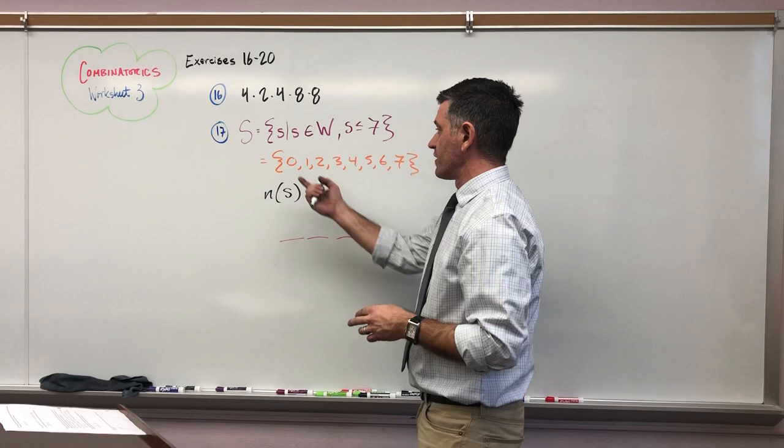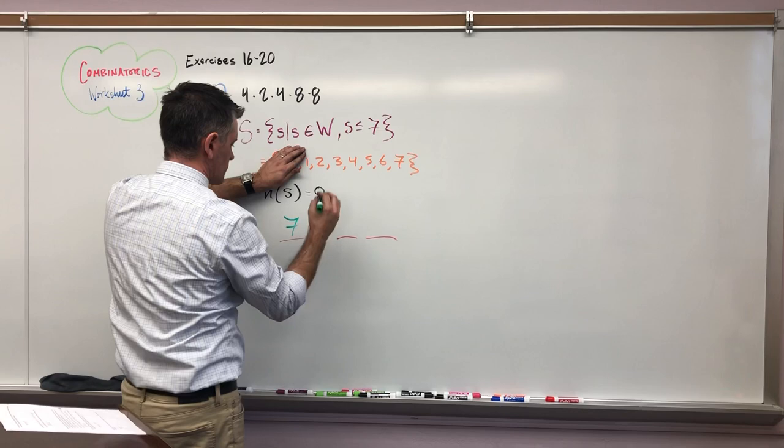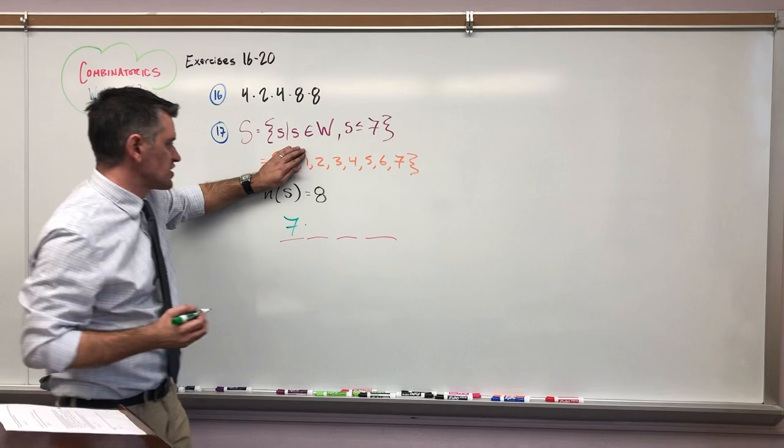Remember, it's a number in our counting system, so it can't start with zero. So in fact, I only have seven numbers to choose from. Now I'm going to think, well, I'd be inclined to say six next, but remember, now zero is back on the table.